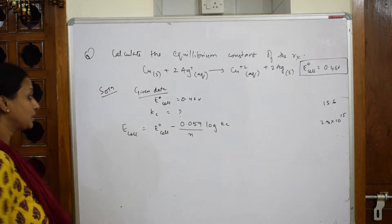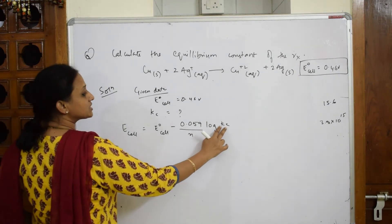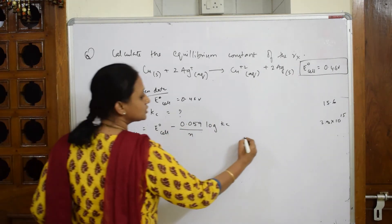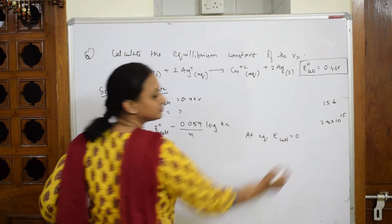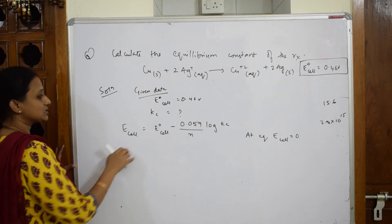This is the formula I've written, but when it is in equilibrium state we very well know E cell at equilibrium is equal to zero. So what will this equation be?